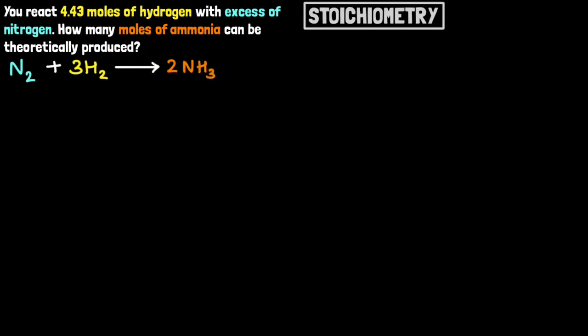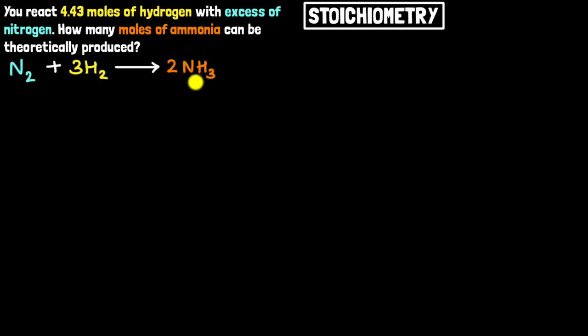This is called stoichiometry, which deals with figuring out the amount of products if you are given a certain amount of reactants, or figuring out how much reactants you need to get a certain amount of products.